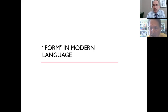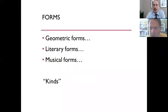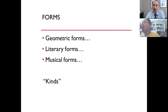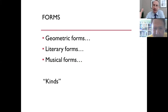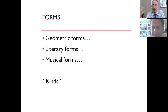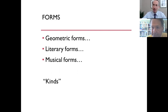Form in modern language is used in different ways. First, we talk about geometric forms — the triangle, the circle, the square. Or we can talk about literary forms or musical forms, and that conveys the idea of a kind of thing. Even geometric forms themselves are kinds of things. You see one triangle, it's just one representative of triangularity, because in the physical world every triangle would be different and maybe not perfect. So that's one meaning for form.